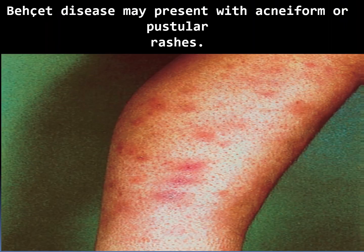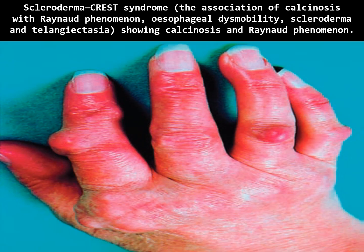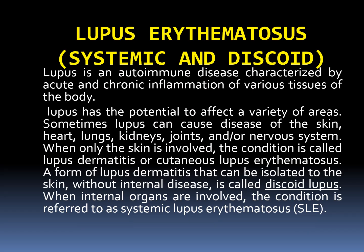Behçet's disease typically manifests with large aphthous-like ulcers, as here in the palate. Behçet's disease may present with acneiform or pustular rashes. Behçet's disease, like other immune complex disorders, may also present with erythema nodosum.